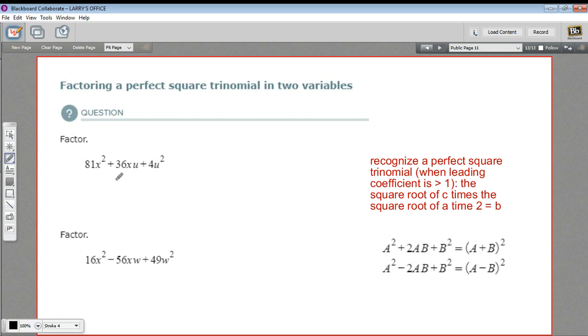The first step is to recognize that you have a perfect square trinomial. You should be looking at the first term and the last term and asking yourself, is that something I can easily take the square root of? And in this case, yes, that's true. The square root of 81 is 9, the square root of x squared is x. So this first term, the square root is 9x.